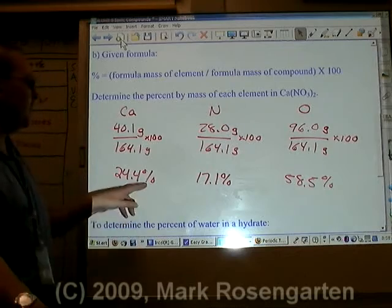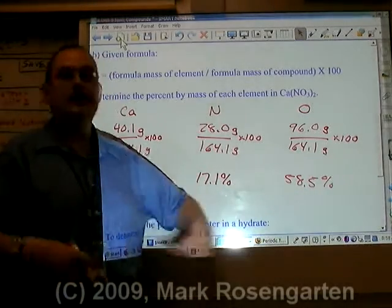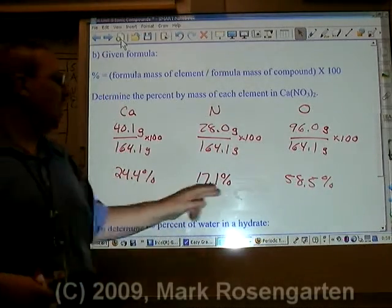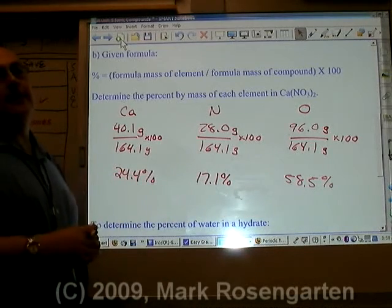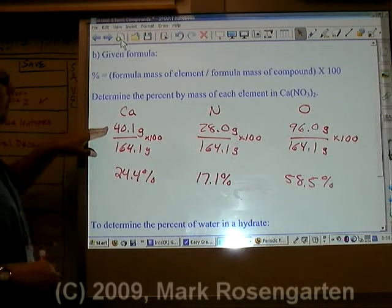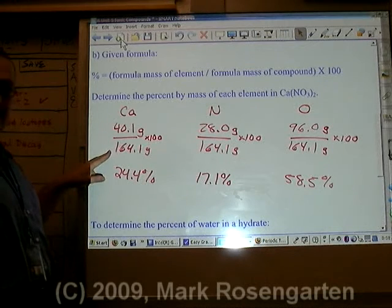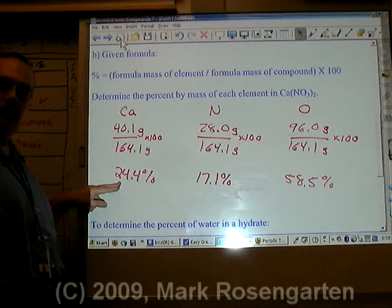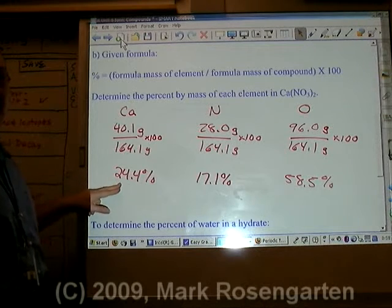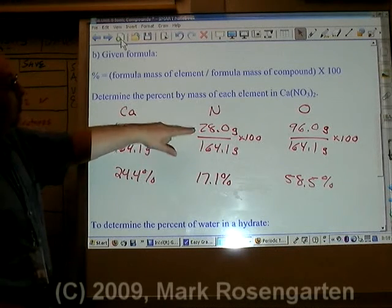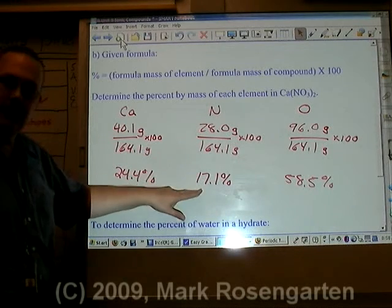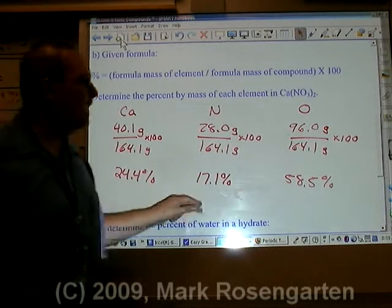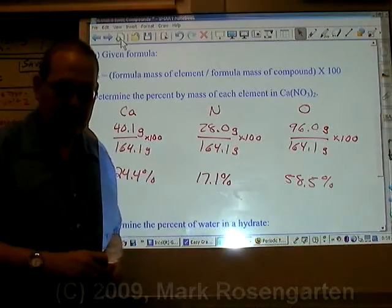This does add up to 100. So calcium, which makes up 40.1 of the 164.1, makes up 24.4 percent of the compound's mass. Nitrogen, which makes up 28 out of 164.1, makes up 17.1 percent of the compound's mass. And oxygen makes up 58.5 percent.